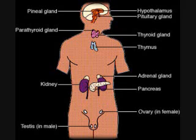Luteinizing Hormone, or LH. Gland: Anterior Pituitary. Function: to stimulate secretion of testosterone, to trigger ovulation, and to stimulate secretion of estrogen and progesterone.